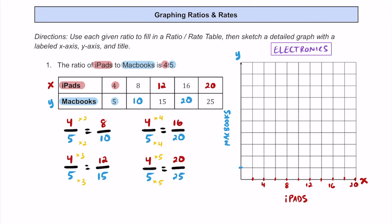Along the y-axis, I'll go by 2.5, so the second line is 5, then 10, 12.5, 15, skip one to 20, skip one more to 25. Plotting the points: (4, 5), (8, 10), (12, 15), (16, 20), and (20, 25). Connecting these ordered pairs, we have a graph showing a linear relationship — a ratio that goes through the origin.